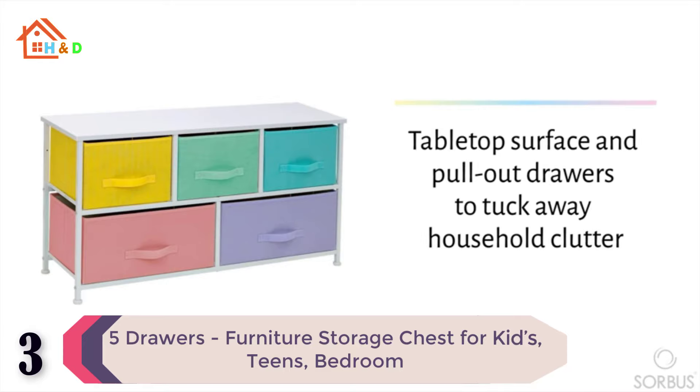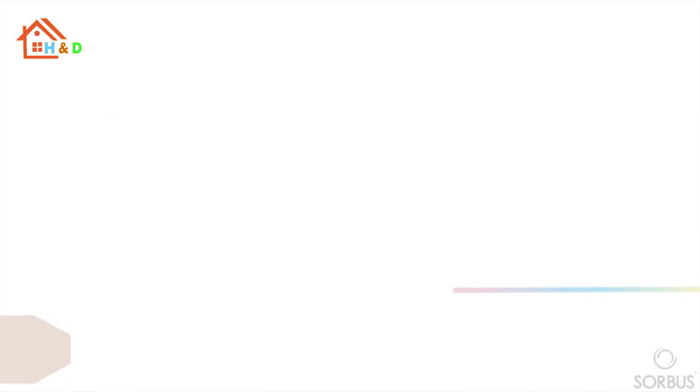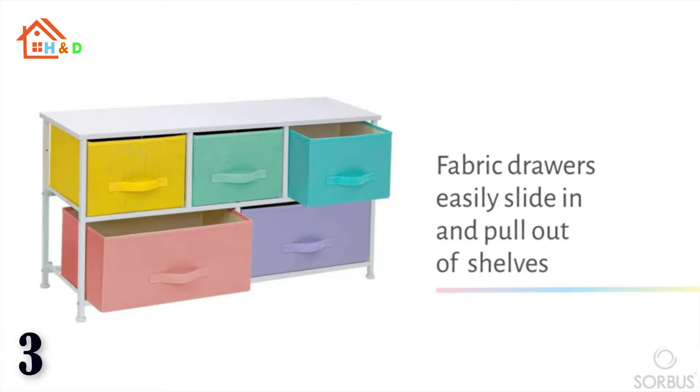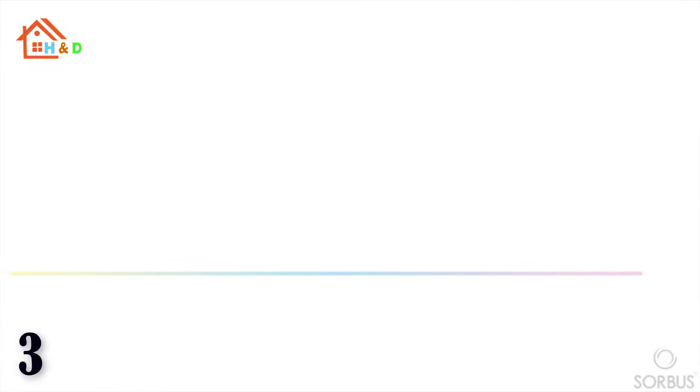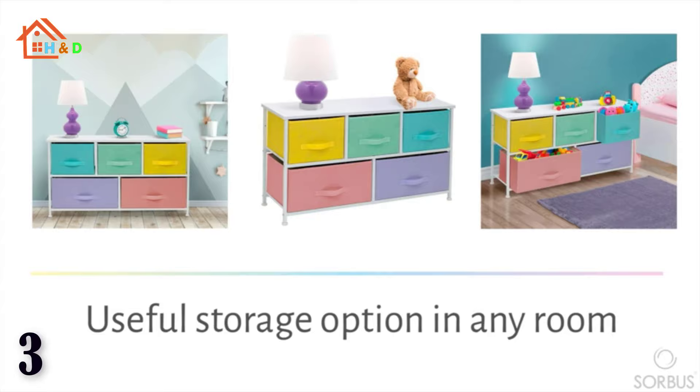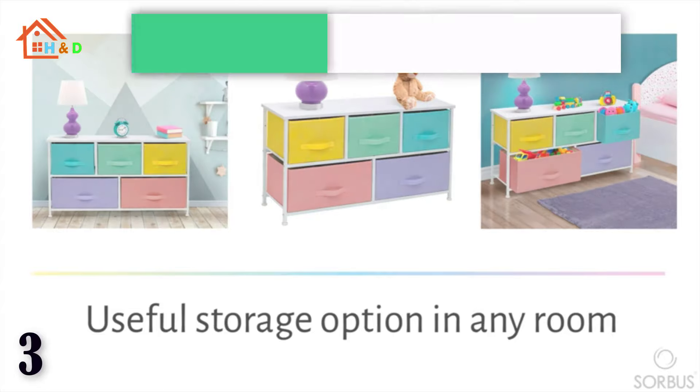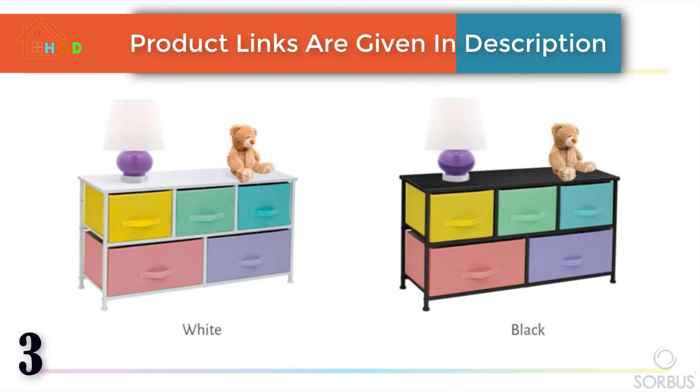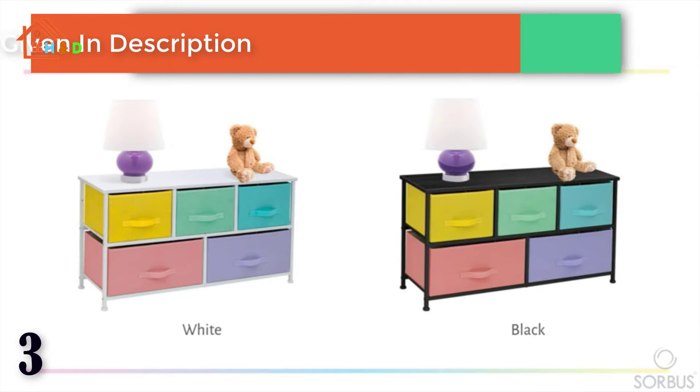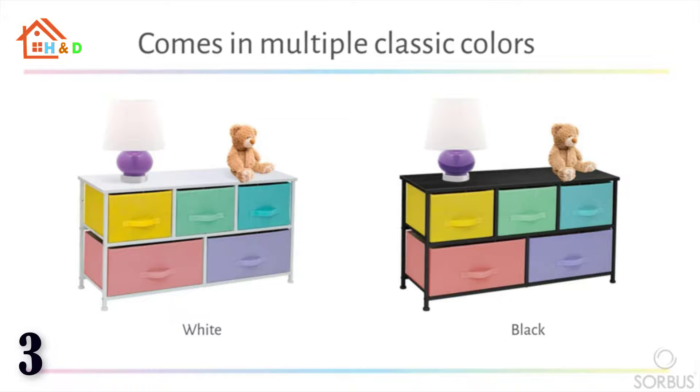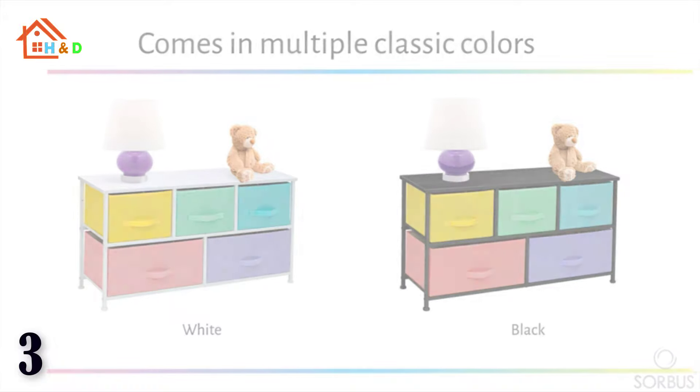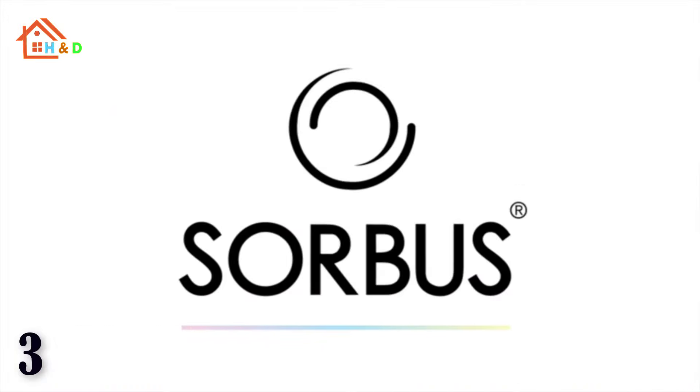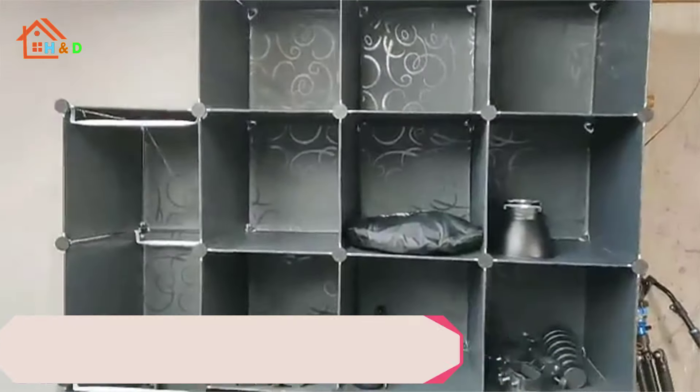This colorful dresser chest features a tabletop surface and pull-out drawers to tuck away household clutter. Place all of your child's folded T-shirts, jeans, and pajamas, or extra blankets and toys within the spacious fabric drawers. For display, the top surface can be used for lamps, books, clocks, and more. The playful pastel color combo makes this furniture storage charming for any nursery, playroom, or bedroom.